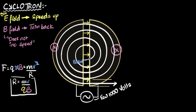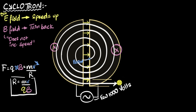We've already seen how cyclotrons make use of oscillating electric fields to speed up charged particles, and then magnetic fields to make them turn and re-enter those electric fields so that they keep on accelerating, keep on speeding up over and over again to obtain very high speeds.